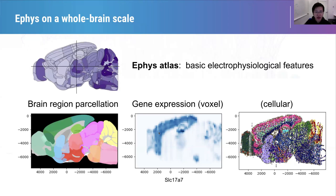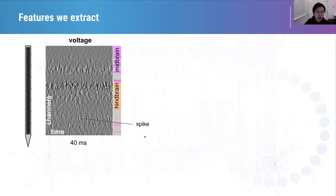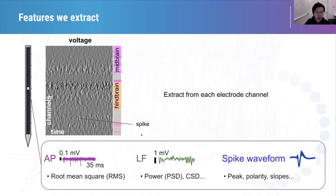So our goal in this IBL task force is to characterize basic electrophysiological features across the entire mouse brain and generate a comprehensive map. By using Neuropixels recording in IBL collaboration, we can extract multiple EFACE features from spiking and voltage data, including AP data, low frequency data, and spike waveform information.